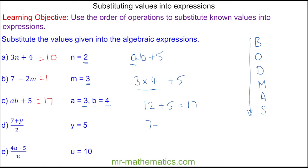For question d, we have 7 plus y, and y is 5, over, which means divided by 2. We'll work out the numerator first, which we can put in brackets. 7 add 5 is 12, and 12 divided by 2 is 6.